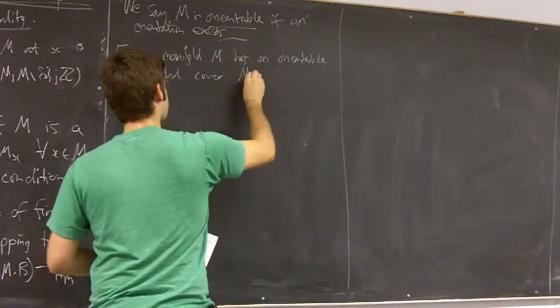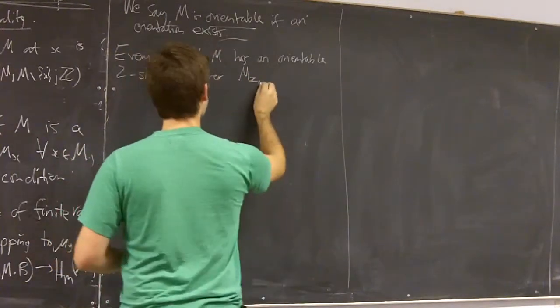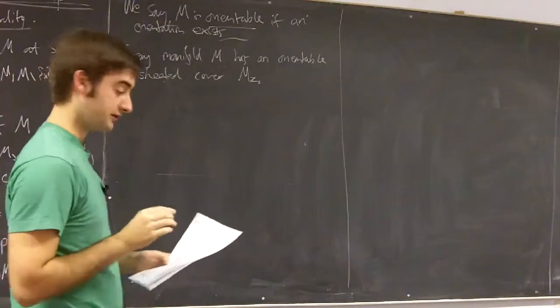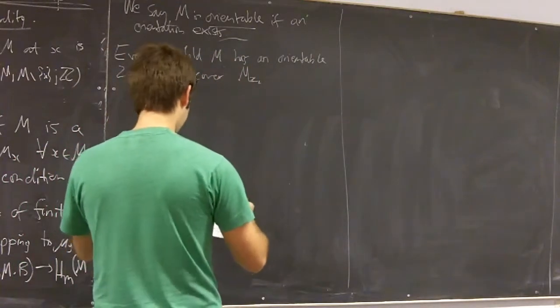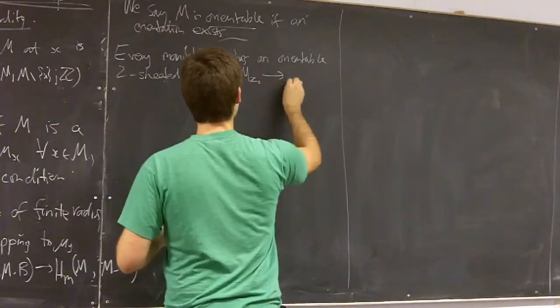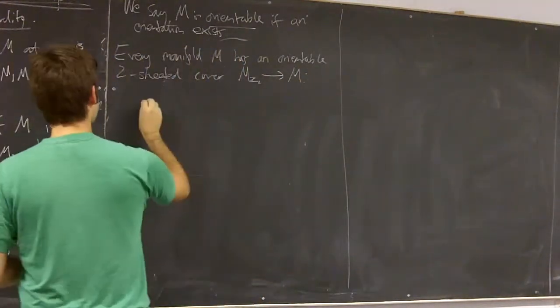which I'm going to suggestively denote as M_{Z mod 2} and let me explain how we get this double cover. Well,